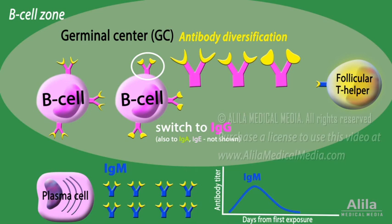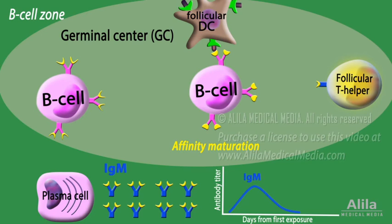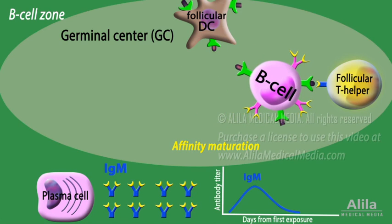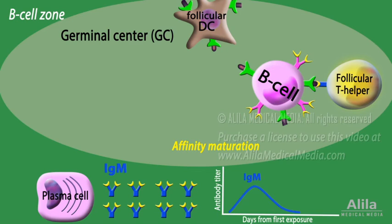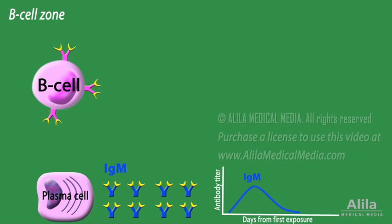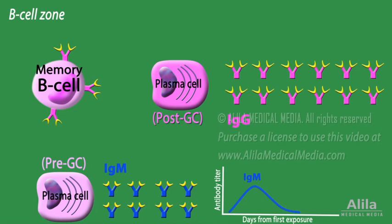This process produces slightly different variations of the same antibody, which are then subject to a binding test to the same antigen. Those that no longer bind are discarded, while the remaining compete for binding to antigen-specific T helper cells. B cells with the highest affinity to the antigen win the interaction with T helpers and exit the germinal center. They can either become long-lived memory B cells or differentiate to antibody-producing plasma cells. This second batch of plasma cells produces better antibodies, lives longer than the first batch, and makes antibodies of different classes, which neutralize the pathogen in many different ways.